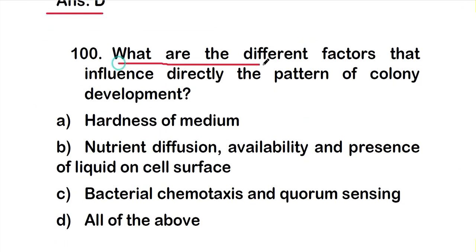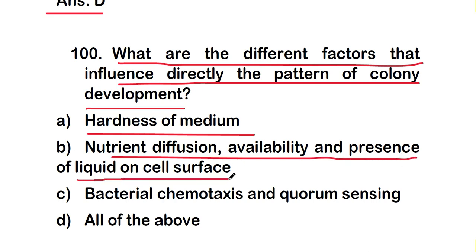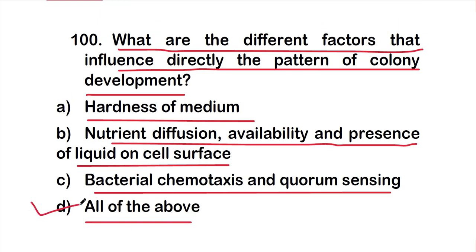Question number 100: What are the different factors that directly influence the pattern of colony development? Option A: hardness of medium, option B: nutrient diffusion, availability, and presence of liquid on the surface, option C: bacterial chemotaxis and quorum sensing, option D: all of the above. The right answer is option D — all of the above. These are all 20 questions of this part 5 video on microbial culture media. Thank you for watching.